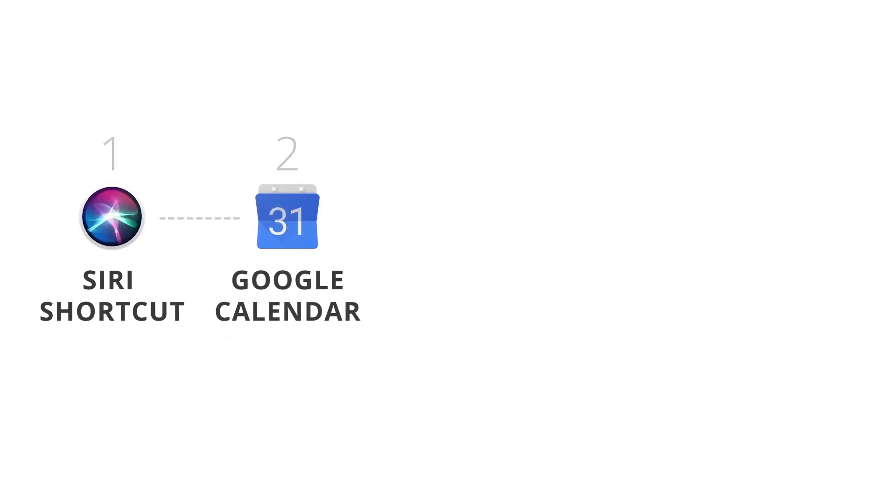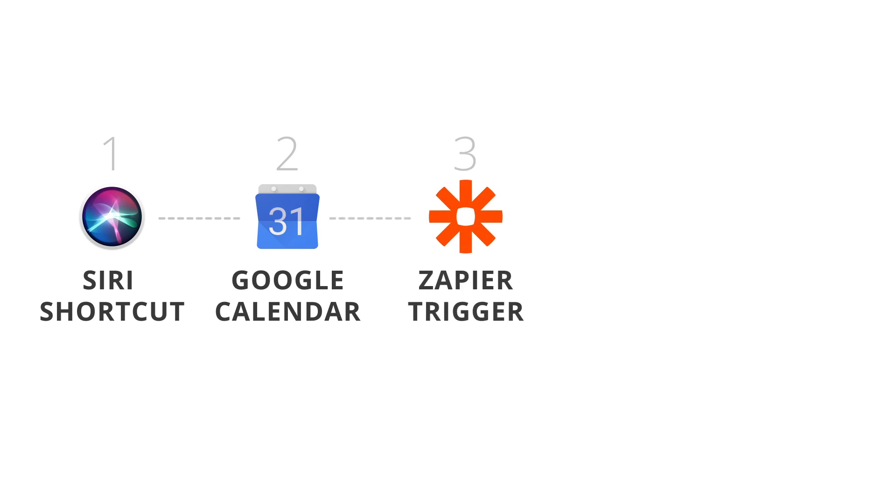Unfortunately you do have to put in a specific time format like '2:15 PM' with the colon and everything. Ideally in a future iOS version you could just say something like 'working until 4' and Siri would know that's today at 4 PM. What this actually does is create a new event on a Google Calendar.